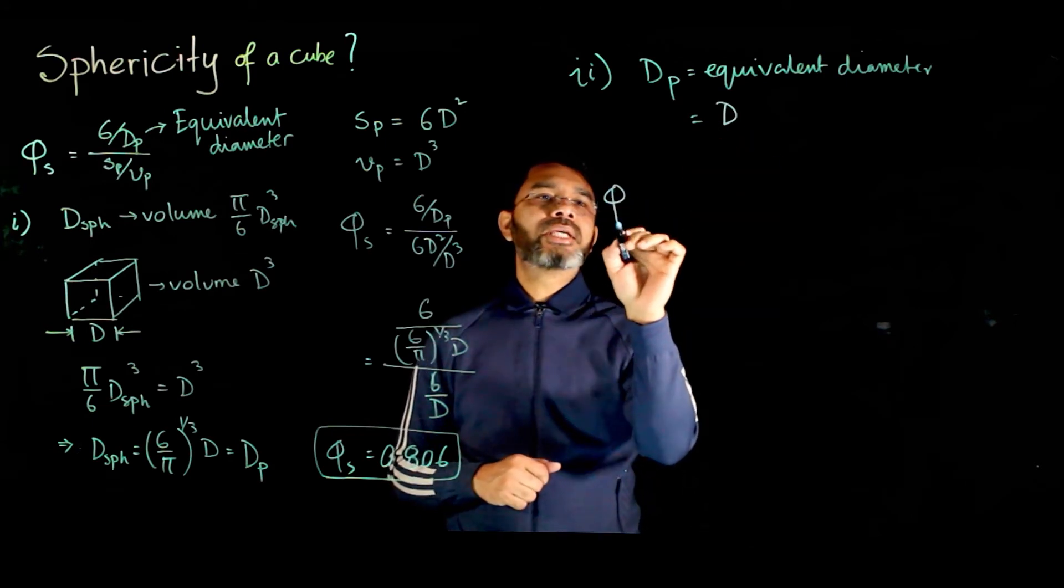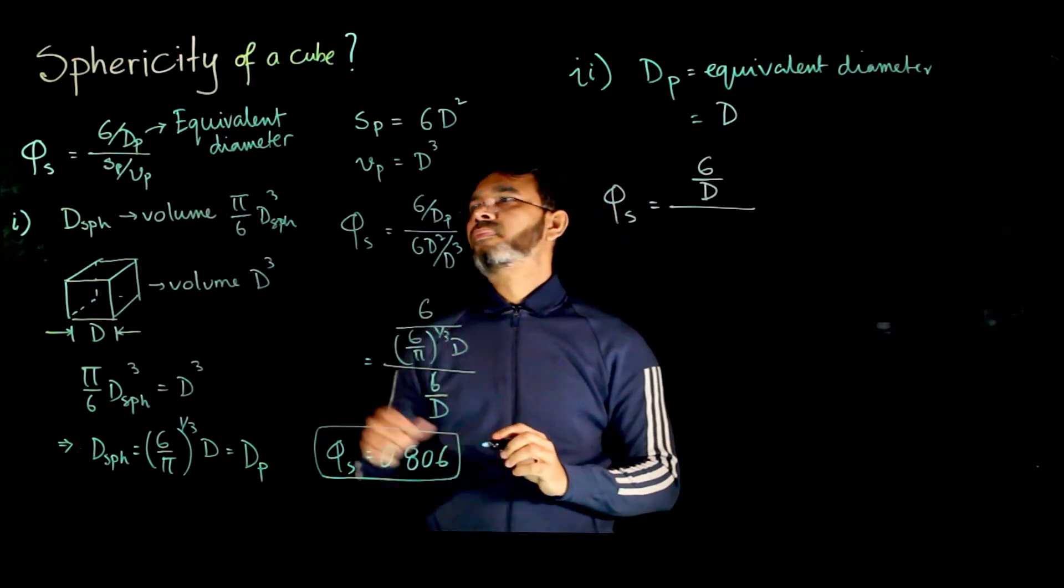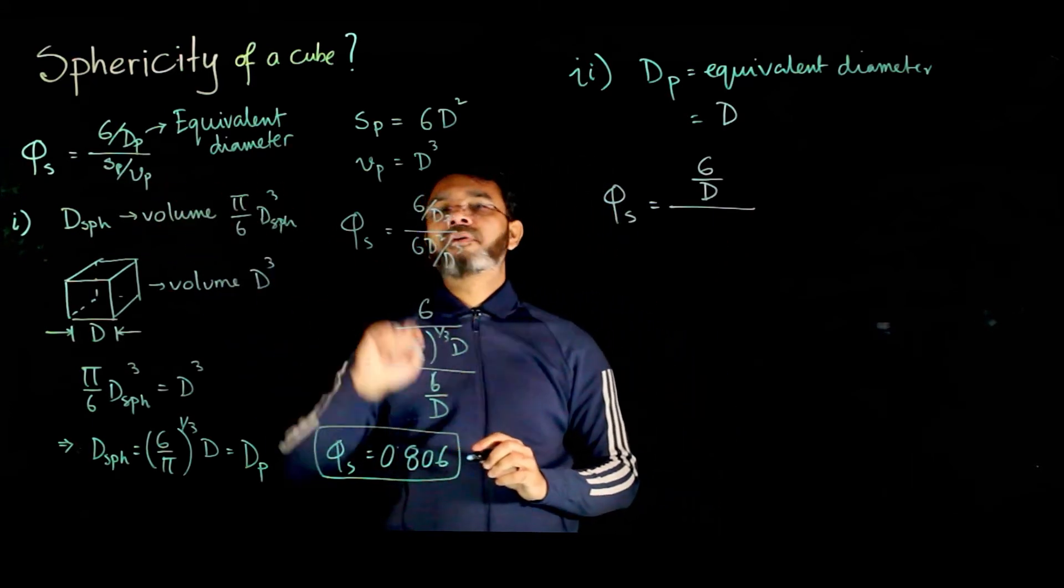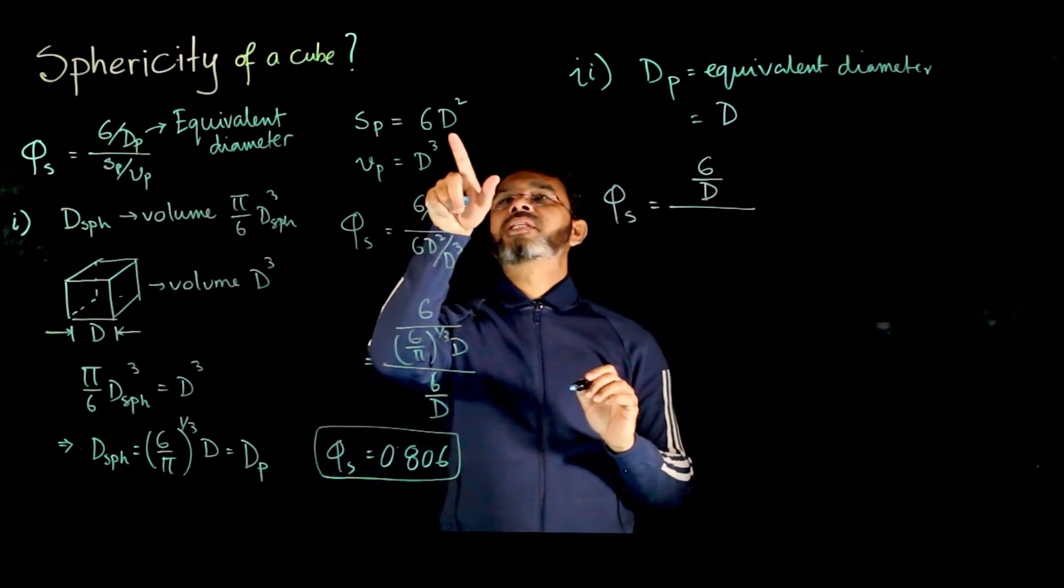Now if you plug in this equation, we get 6 over d, dp equals d, and then sp over vp. Again, that becomes, we get the value of 1.